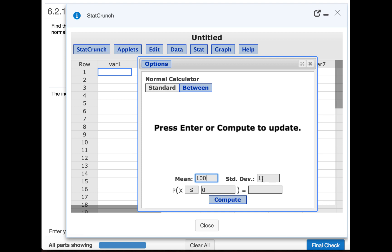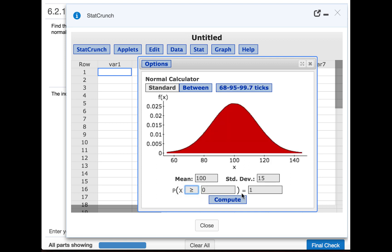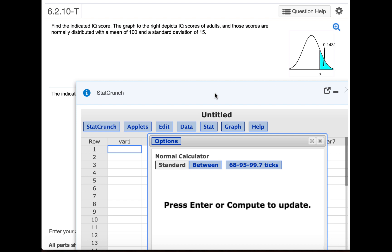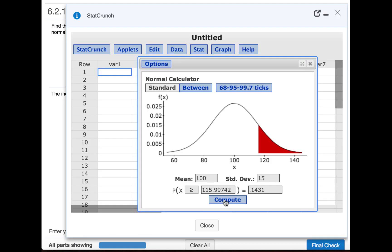We were told that the mean is 100 and the standard deviation is 15. We will change the inequality to greater than and type in .1431 since in our example 14.31% of the distribution is greater than this x value. Click Compute and this gives us a value of 116 if we round to the nearest whole number as requested in the problem.